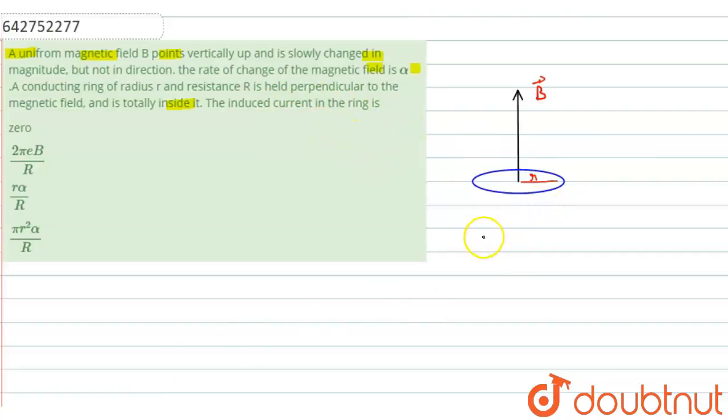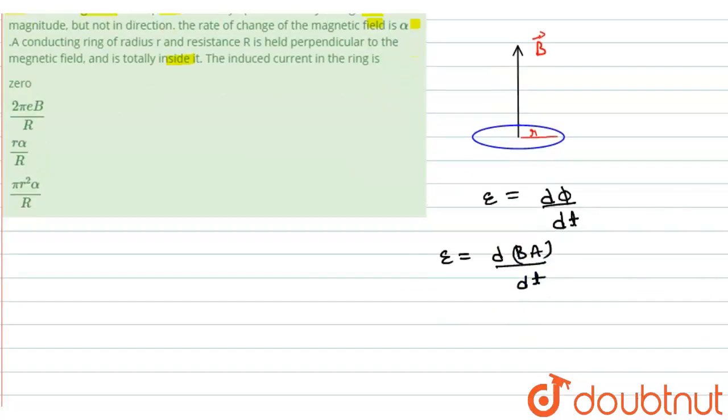Students, as we know that the induced emf E is equal to the rate of change of magnetic flux, that means d(phi)/dt. And as we know that magnetic flux is equal to B·A, divided by dt. So we can write E is equal to A dB/dt.